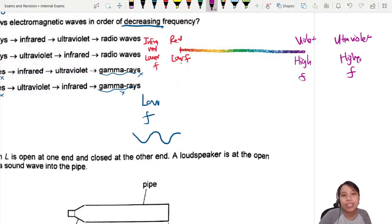So visible light is our entire rainbow. This is visible. Any higher is ultraviolet, any lower is infrared.